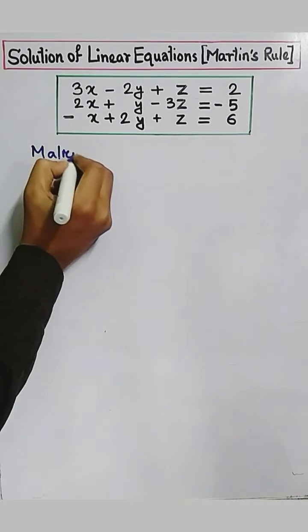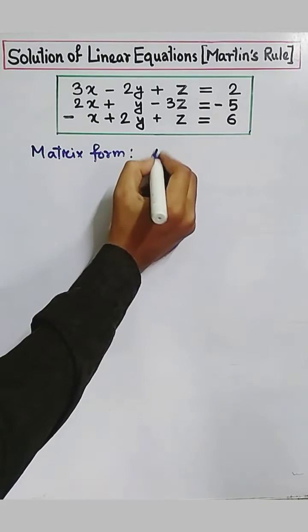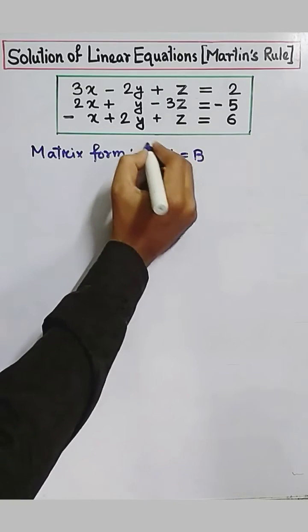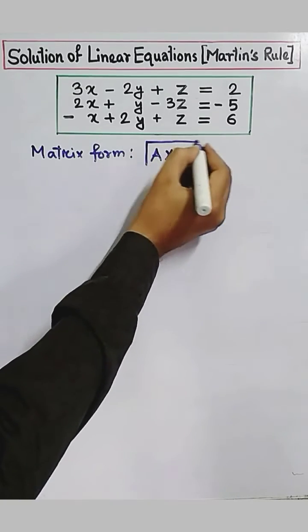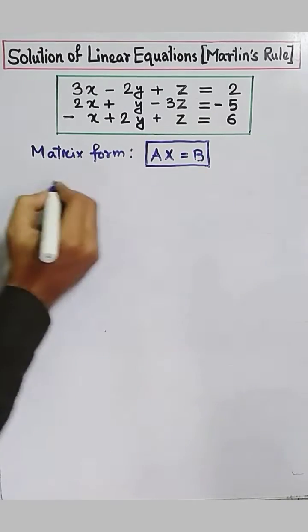First, we have to write the matrix form. So what is the matrix form? That is Ax equals b. So what is A, what is x, and what is b?